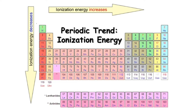The ionization energy increases. 4Be and 5B — let's see what the ionization energy is. 5B is in period 2, and ionization energy increases across the period.